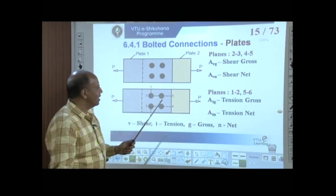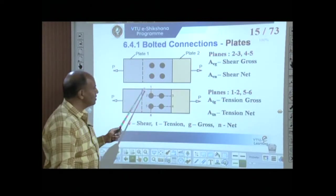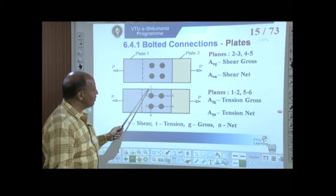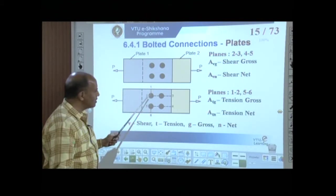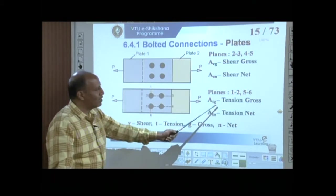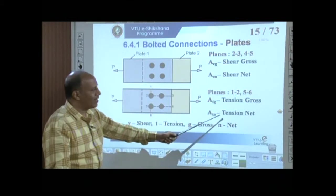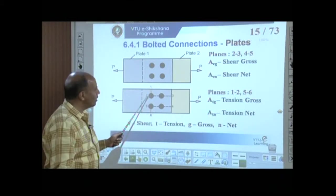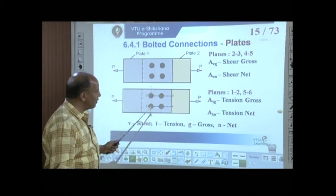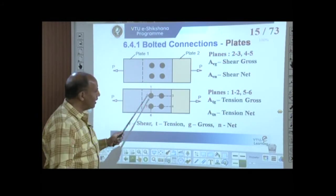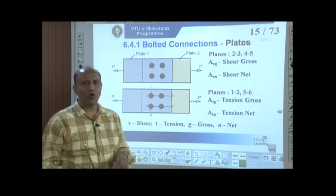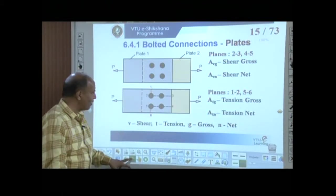For gross tension area Atg with planes 1-2 and 5-6: take width 1-2 times thickness plus width 5-6 times thickness. For net tension area Atn: deduct half a hole diameter from plane 1-2 and half from plane 5-6, sum them, and multiply by thickness. This completes the area calculations for this failure mode.